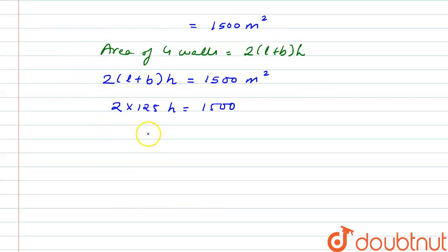From here we have the value of H as 1500 divided by 250, or we can say that H is equal to 6 meters. So we have found out that the height of the hall is 6 meters. Thank you.